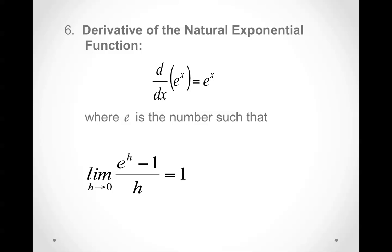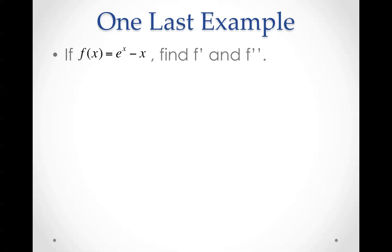The derivative of a natural exponential function: the derivative of e to the x is e to the x, where e is a number such that the limit as h approaches 0 of (e to the h minus 1) over h equals 1.